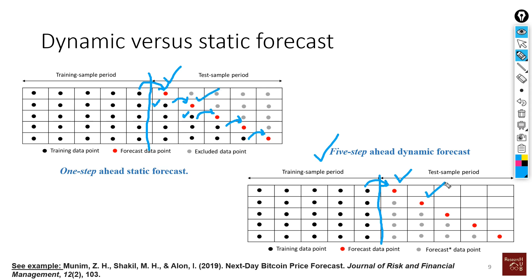From the second data point onward, dynamic and static diverge. In dynamic forecasting, we use the previously forecasted value as a data point to estimate the next data point — we are using a forecasted value to forecast the next step ahead. In static forecasting, we are always using real data; we only use actual observed data as it becomes available.